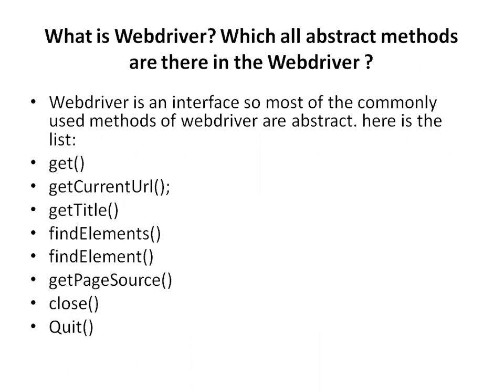Next: what is WebDriver and which abstract methods are there in it? We all know WebDriver is an interface, and most of its commonly used methods are abstract. The list includes: get, getCurrentURL, getTitle, findElements, findElement, getPageSource, close, and quit. These are all the abstract methods present in the WebDriver interface.